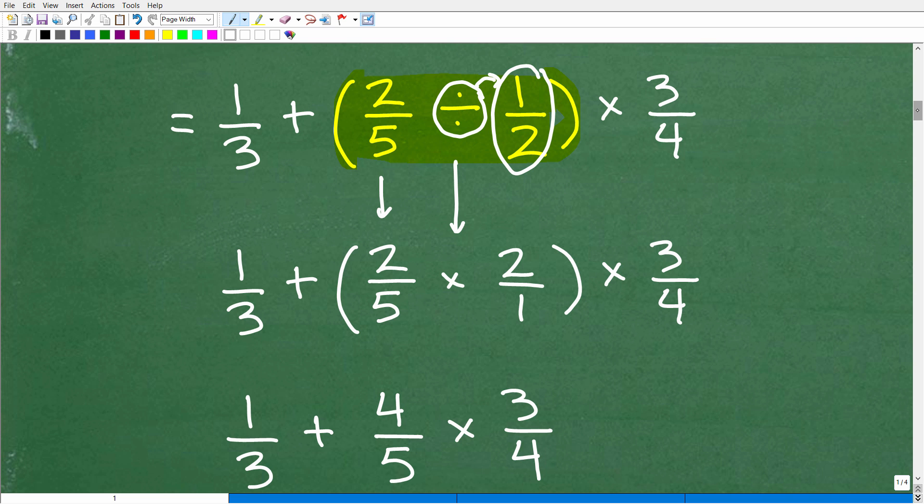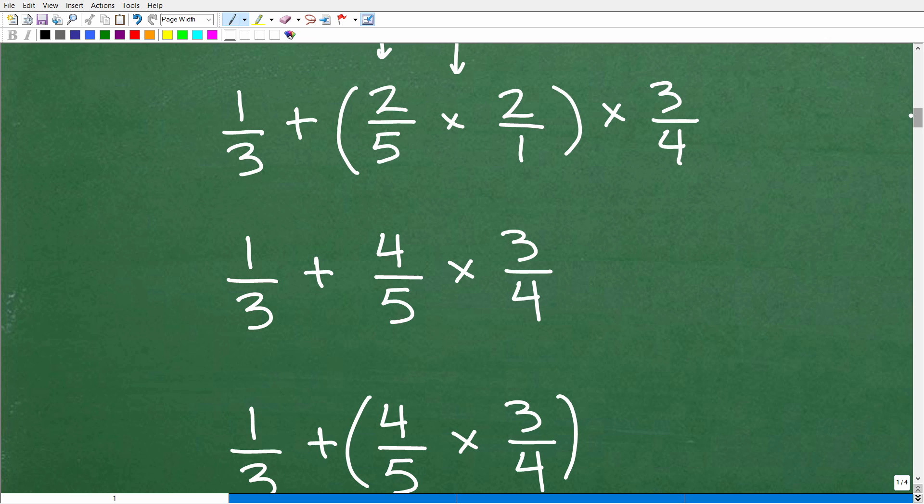All right, so hopefully you're with me. Now let's kind of focus in on this part of the problem. So I have 2/5 times 2 over 1. So 2 times 2, that's going to be 4. This is how we multiply fractions now. We multiply the respective numerators and the respective denominators. So 2 times 2 is 4. 5 times 1 is 5.